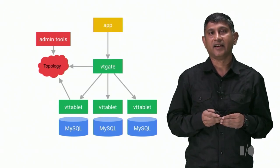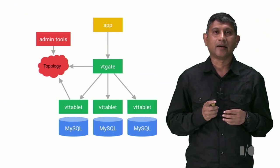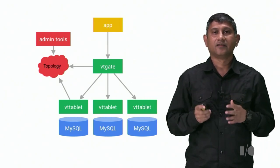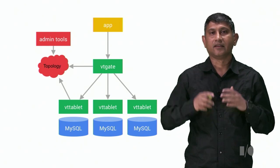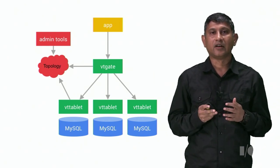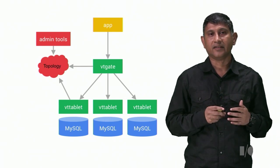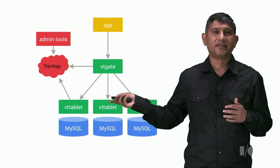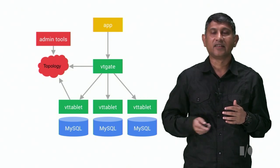And finally, we built VTGate, which is the main server that the apps connect to. This server makes all the databases look like a collective whole. Internally, what it does is to use the topology to figure out where to send a query, which will eventually reach the VTTablets, where the actual work is done.